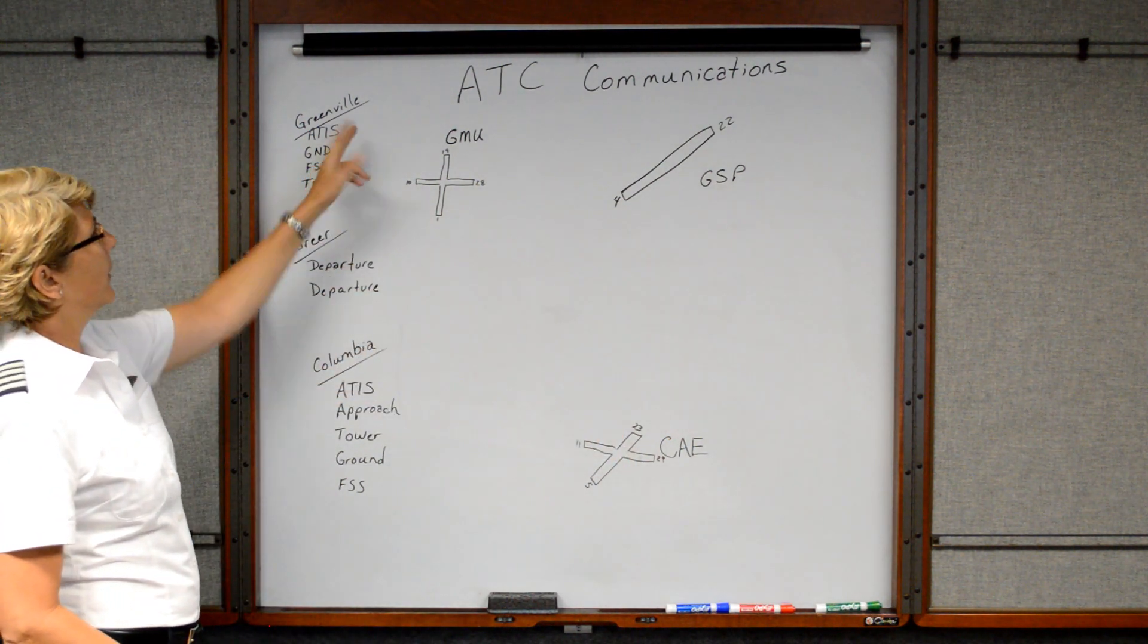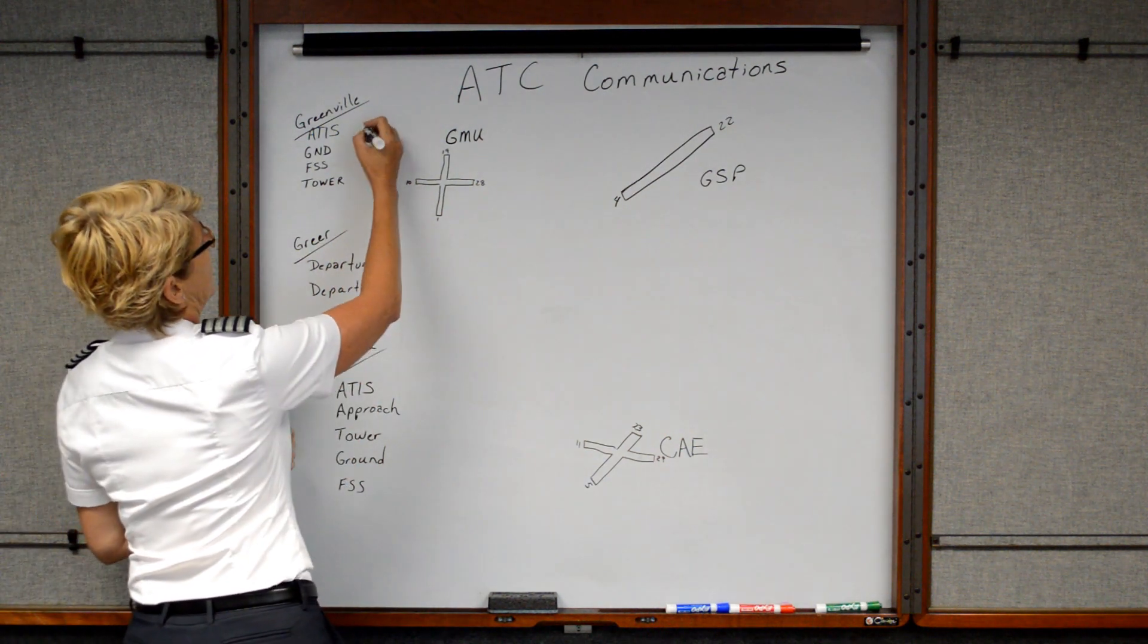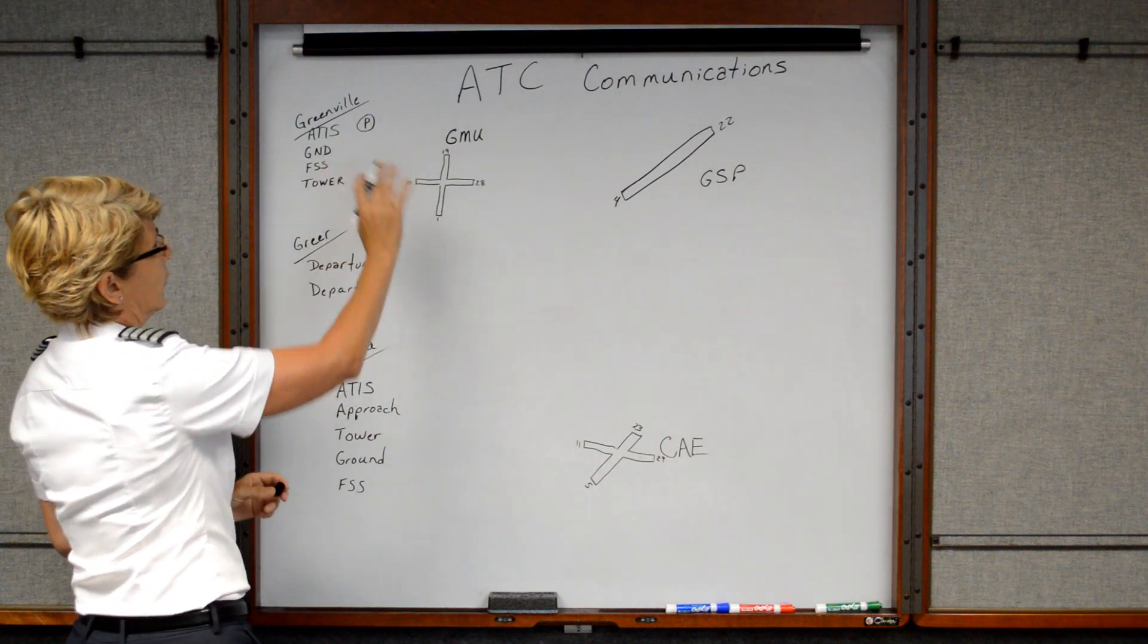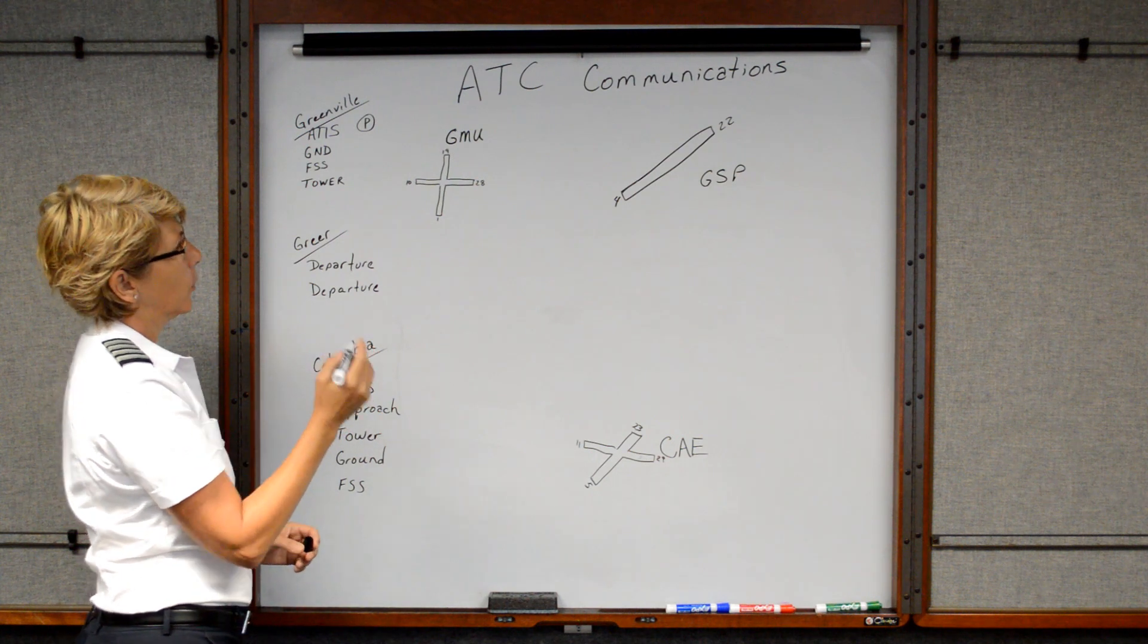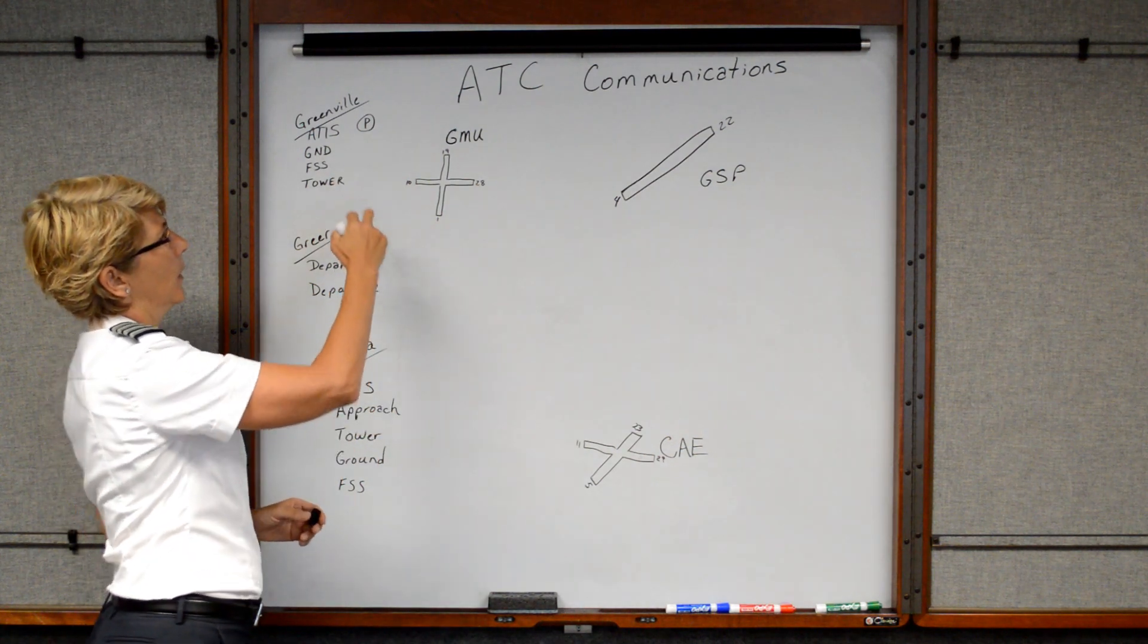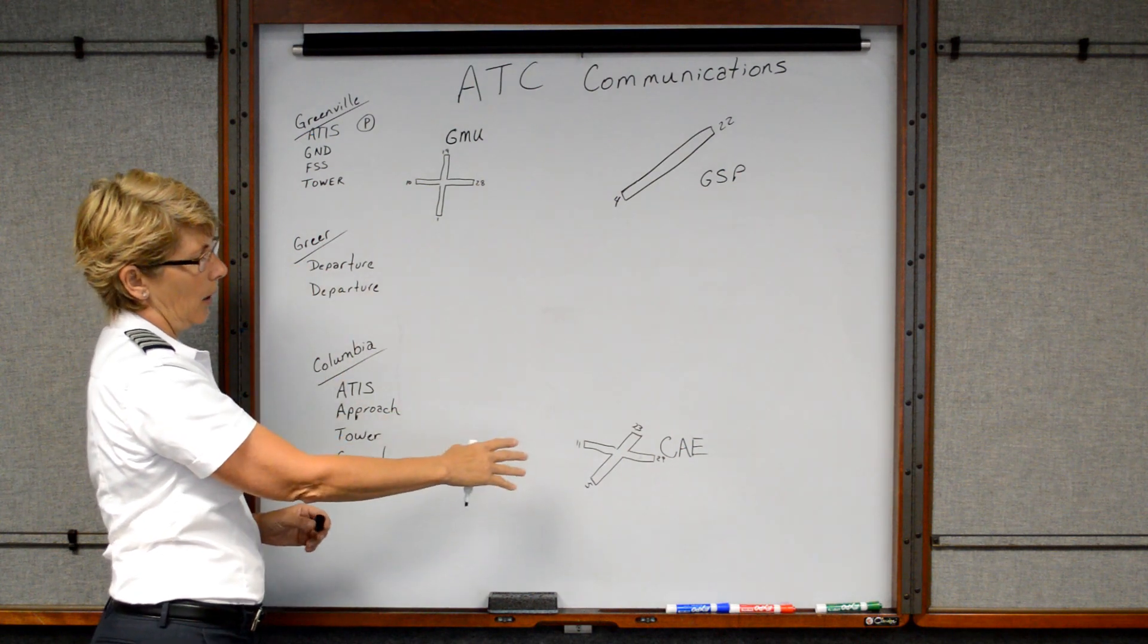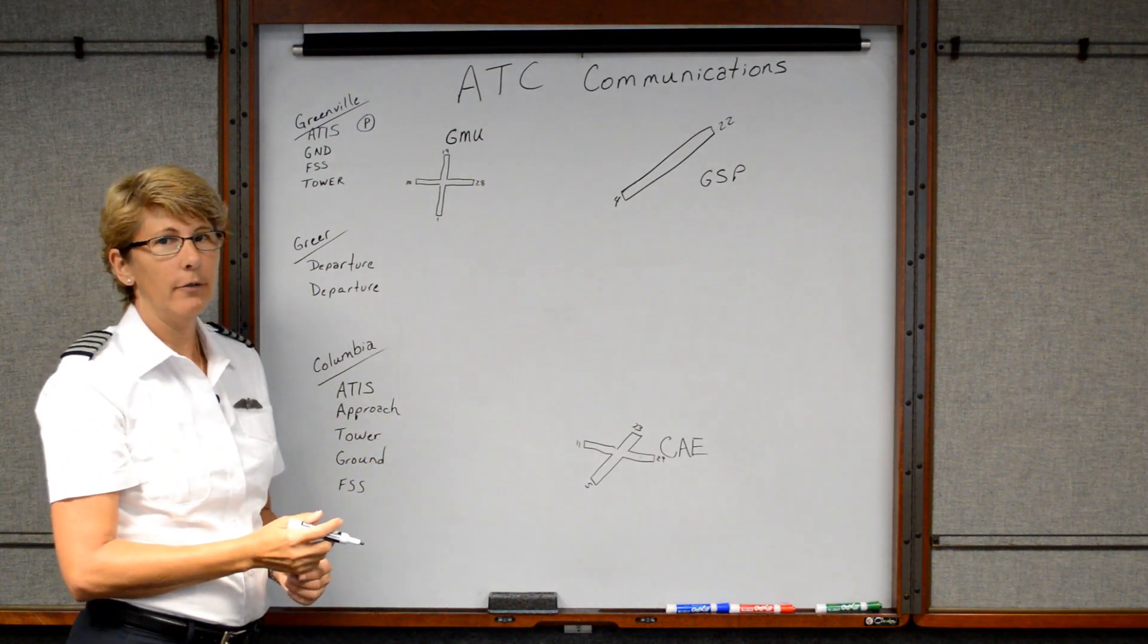At Greenville, first we have to listen to the ATIS, and then we'd of course write down maybe it's ATIS information PAPA, and then the other information that goes with that. Then we are going to contact Ground, so we'd say Greenville Ground, Skyhawk 8700-PAPA, information PAPA, request flight following to Columbia, Charlie Alpha Echo at 5,500.